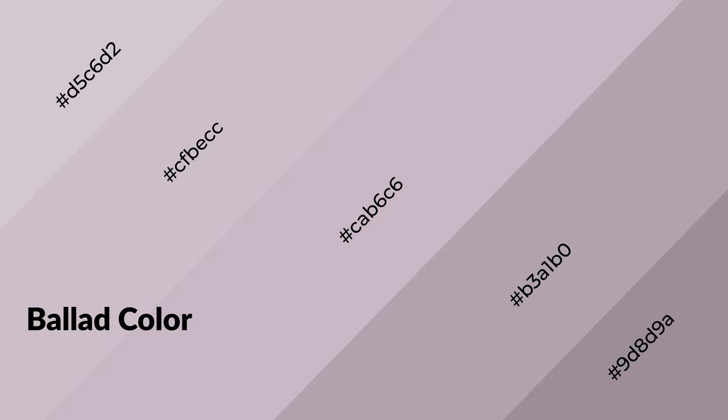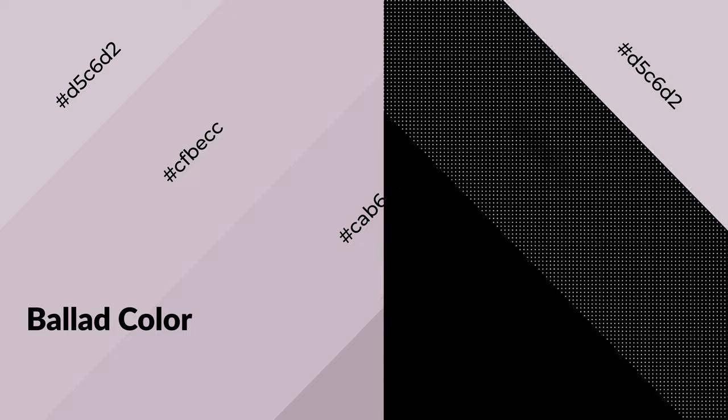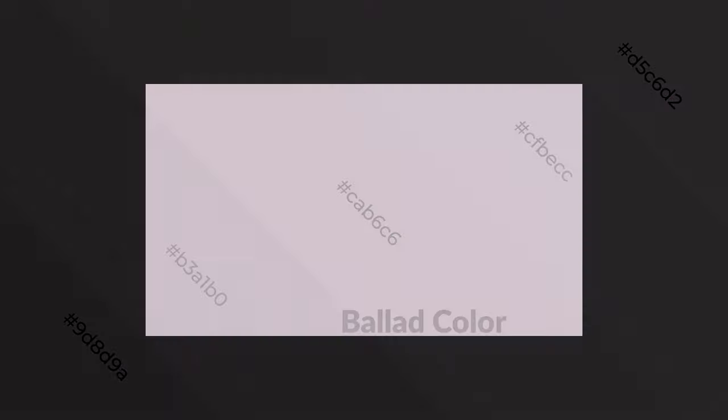Ballad is a warm color, and it emits cozier and active emotion. Warm colors are symbols of warmth, fire, heat, and sunshine. It also evokes joy, passion, love, and even anger emotions. You can see them used in restaurants and gyms.